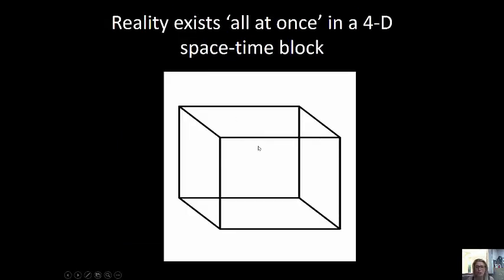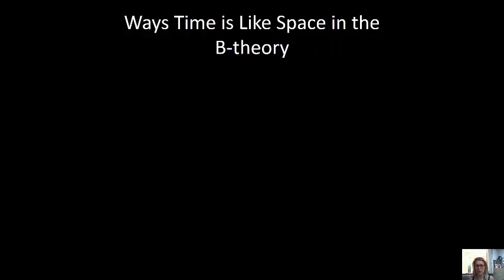So I can't draw a four dimensional object, but just pretend that all of reality is in this space time block. This is all of reality, all present, all at once. I shouldn't say all present, all existent, all at once. The ways time is like space in the B theory.